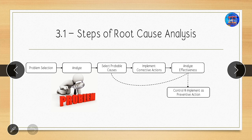Now let's look at the basic steps of root cause analysis. First, we select the problem. In a plant, many problems happen on a daily basis, so we select the problem according to priority or risk. After selecting the problem, we analyze it and select probable causes using cause mapping — for example, identifying two or three causes of that problem.